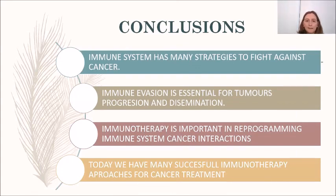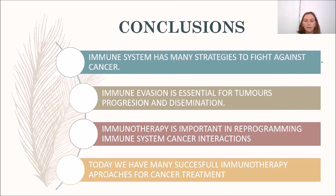In conclusion, the immune system has many strategies to fight against cancer. Immune evasion is essential for tumor progression and dissemination. Immunotherapy is important in reprogramming immune system-cancer interactions, and today we have many successful immunotherapy approaches for cancer treatment. Thank you very much.